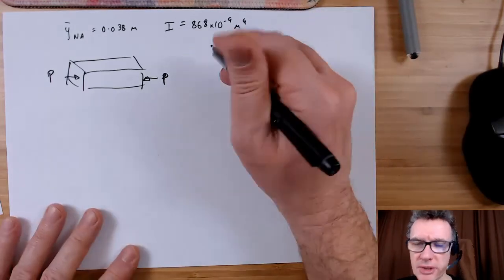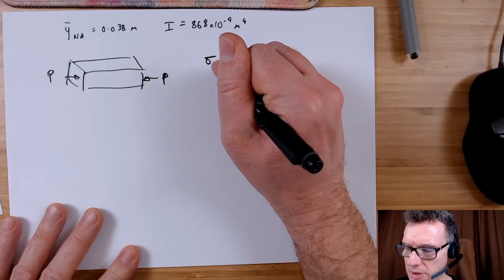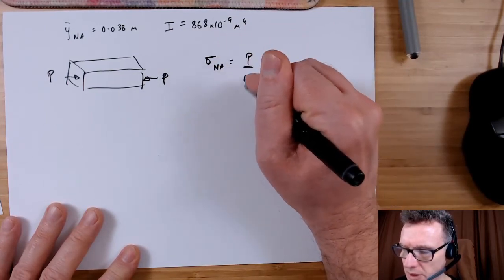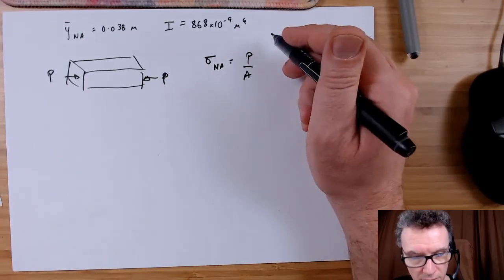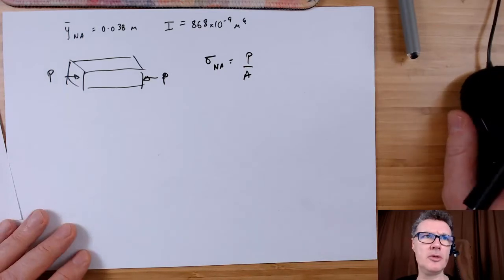The stress is going to be there, so that will be a stress if you like down the neutral axis which will be P divided by A. The other thing I've got from my previous solution, well I didn't work out explicitly but it's straightforward to find, was the total area.